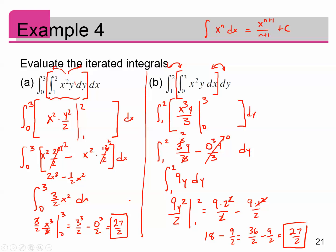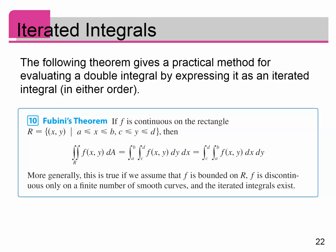So surprise, surprise, we get the same thing no matter which way we integrate. Which leads us to something called Fubini's theorem, which gives us a practical method for evaluating a double integral by expressing it as an iterated integral in either order. Fubini's theorem, it's kind of like Clairaut's theorem. Clairaut's theorem said under certain conditions, the order of partial differentiation didn't change the result. So is that same kind of idea true with integration? And Fubini's theorem says yes, it is.